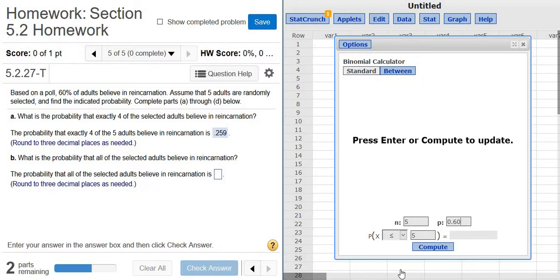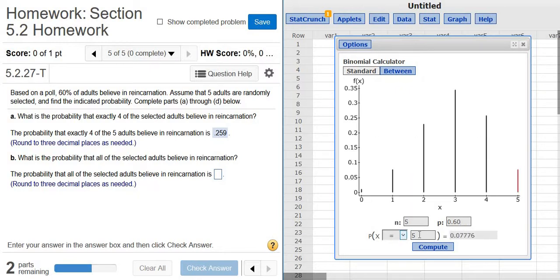So exactly 4 out of the 5. So exactly means equal to. So you change it to 4. And you see I've already got the answer there.